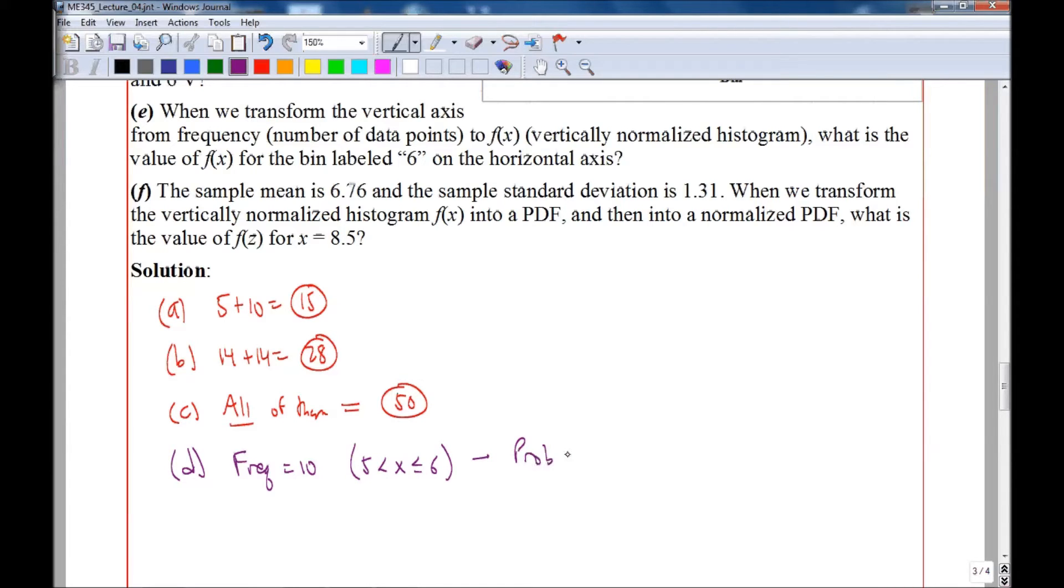And so the probability that any reading lies in that range is frequency divided by n, which would be 10 over 50, the total number of points, which would be 0.20 or 20 percent.